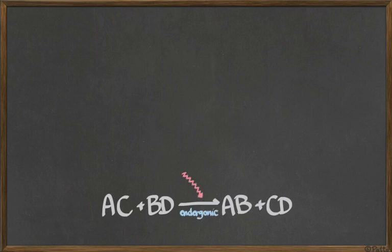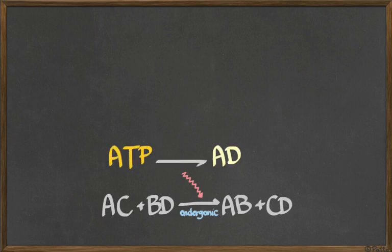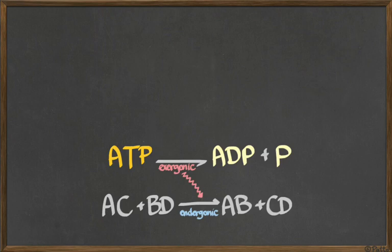If I have a chemical reaction like AC plus BD becoming AB plus CD that requires energy - it's an endergonic reaction - I can couple it with ATP. I transform ATP into ADP plus P, an exergonic reaction, which gives energy through the phosphate to AC or BD, making them more energetic, and then the reaction happens and the phosphate is released. But the question is: how do I make more ATP? If ATP becoming ADP plus P is exergonic, how can I build more? The inverse reaction - because ADP plus P is less energetic than ATP - requires an endergonic reaction, so I need to put in energy.